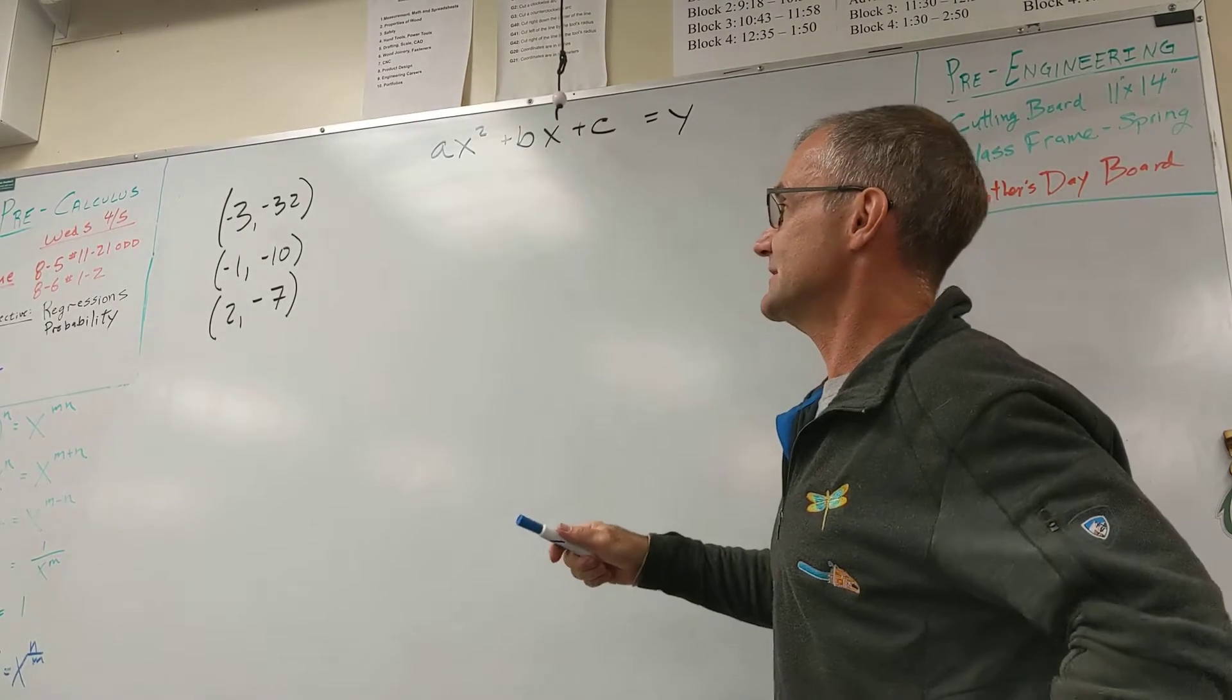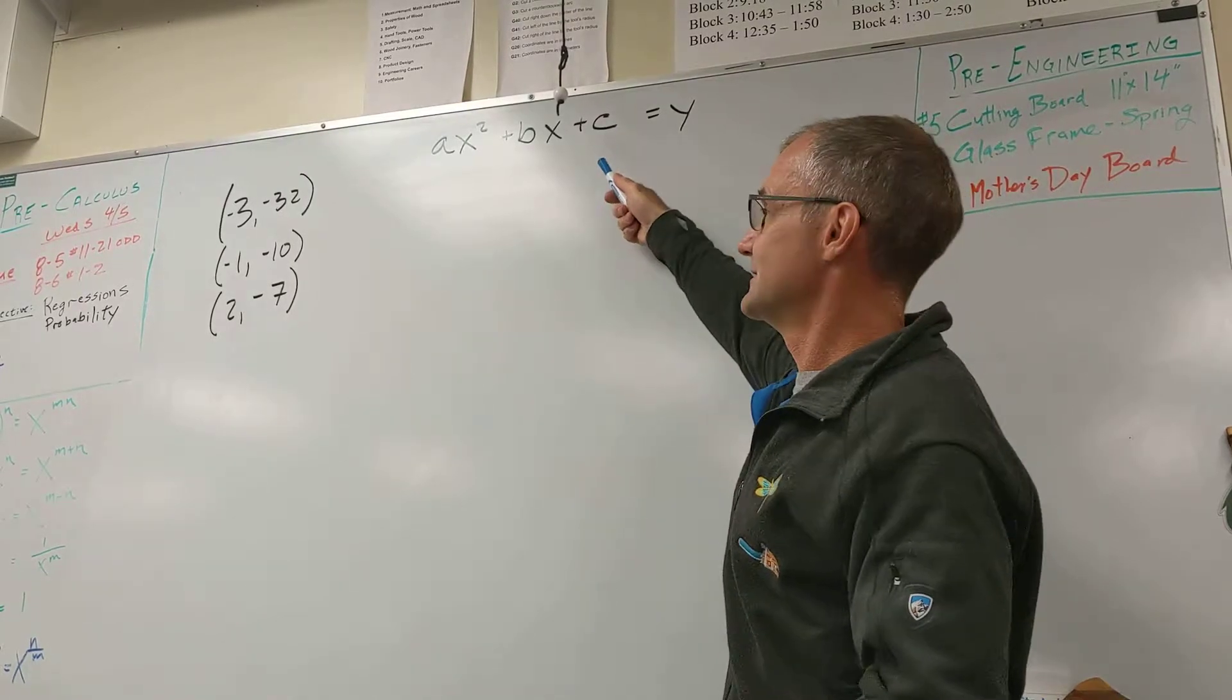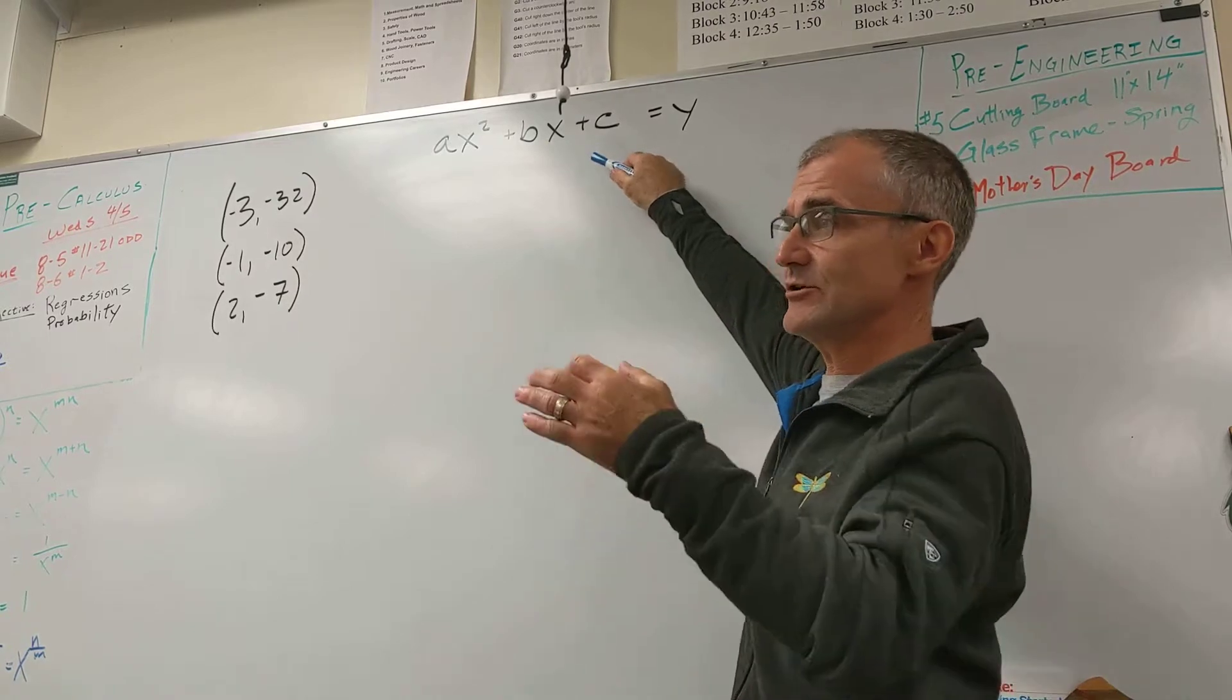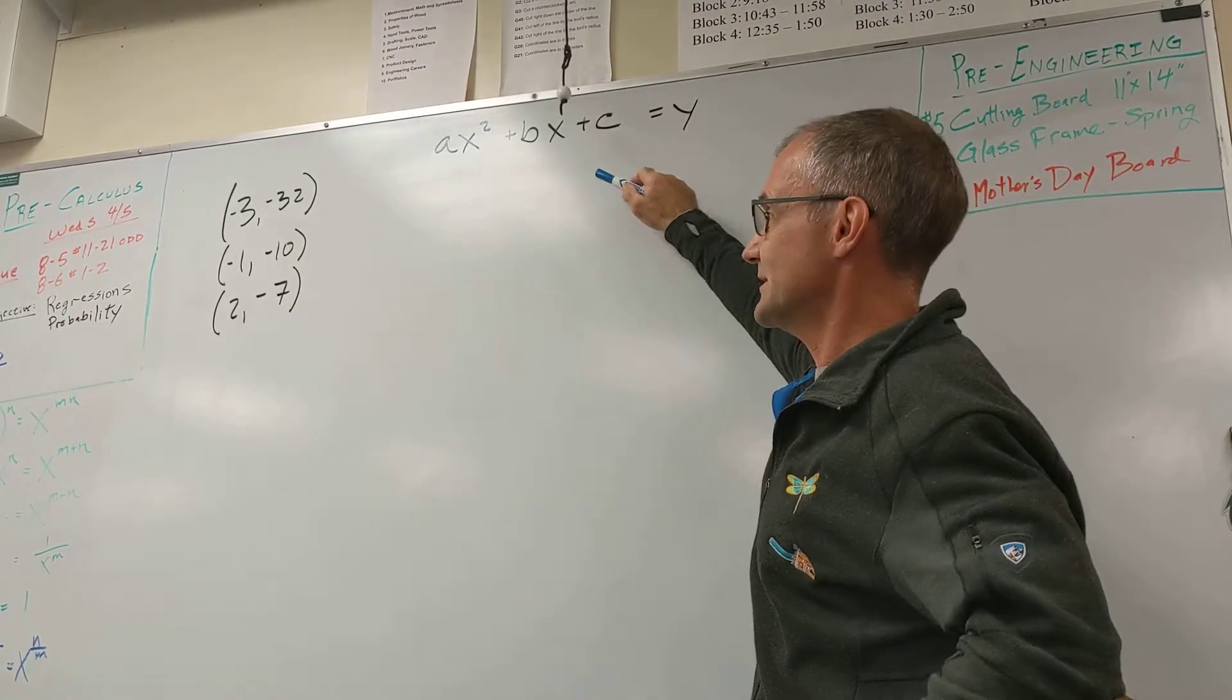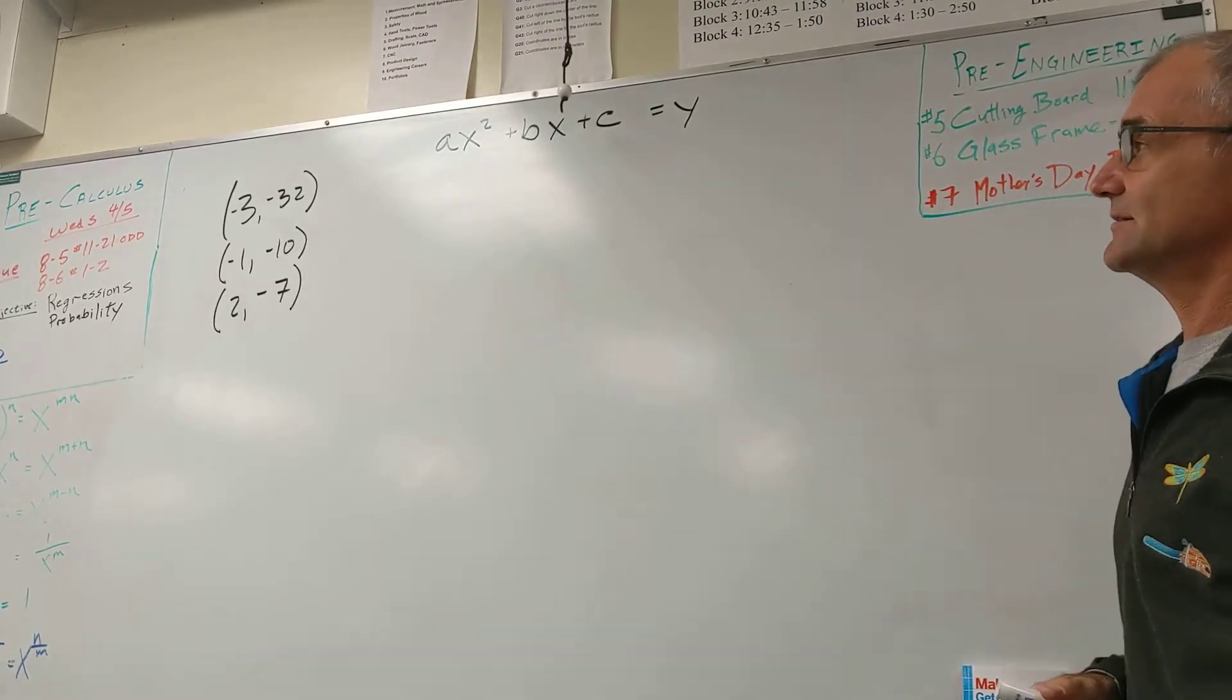So really, first thing you need to do is identify it. So I'm telling you it's a quadratic parabola. Number two is you need a general equation, like a roadmap, where you're going. Number three is you need to take those points and plug them in and create the equation.